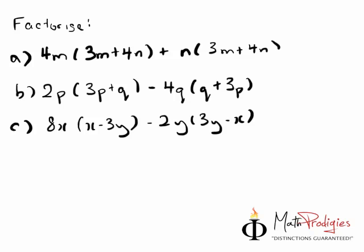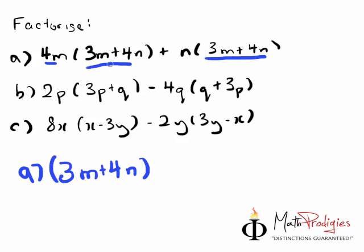I can even do it with mental sums for you, but I'm just showing off. For part A, how do you do these kind of questions? It's very simple. Let me give you the answer straight away. If you see two similar things here, all you have to do is take it out first: 3M plus 4N, multiplied by the other ones outside. So it becomes 4M plus N. That's the first answer.